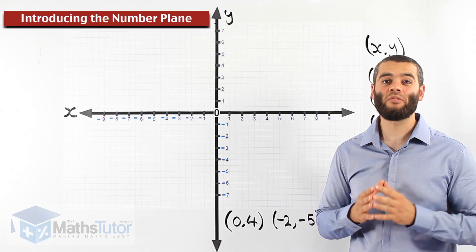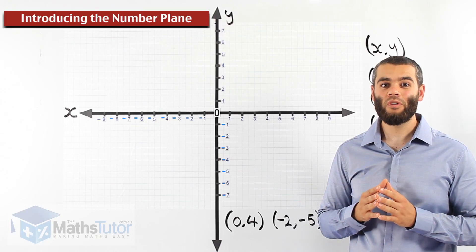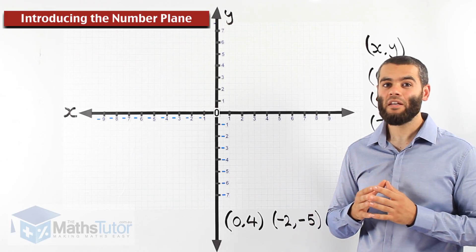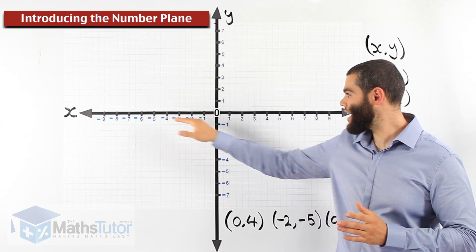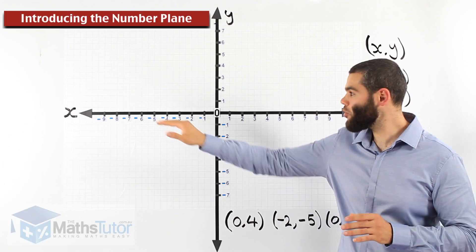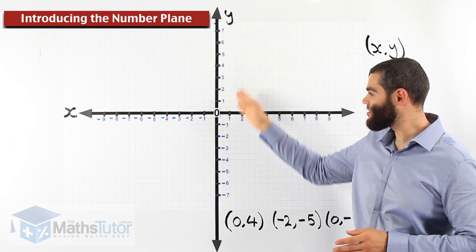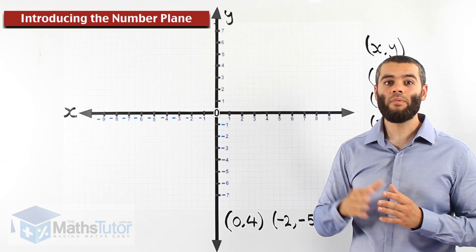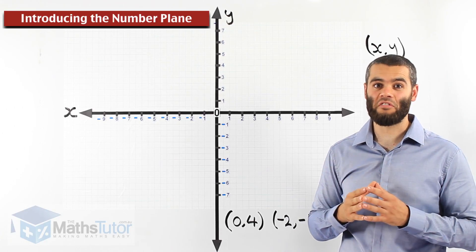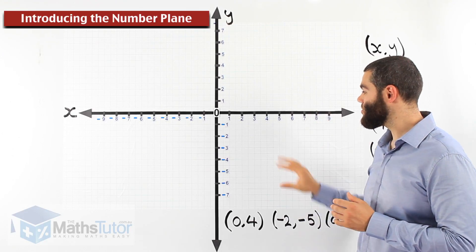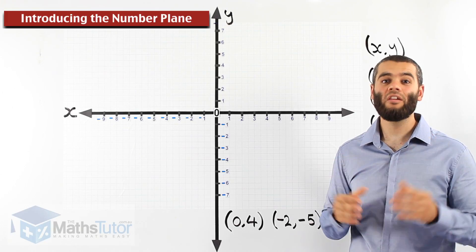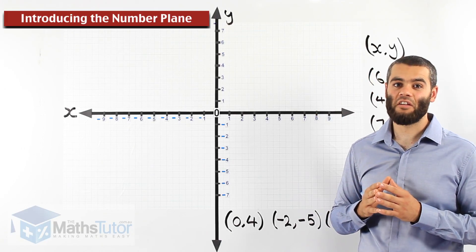Today we have a special lesson. I'm going to introduce the number plane, also called the number lattice. The number plane is made up of two axes: the x-axis going horizontally and the y-axis going vertically. The number plane is used for coordinates and plotting points, and also to draw straight lines and curved lines.